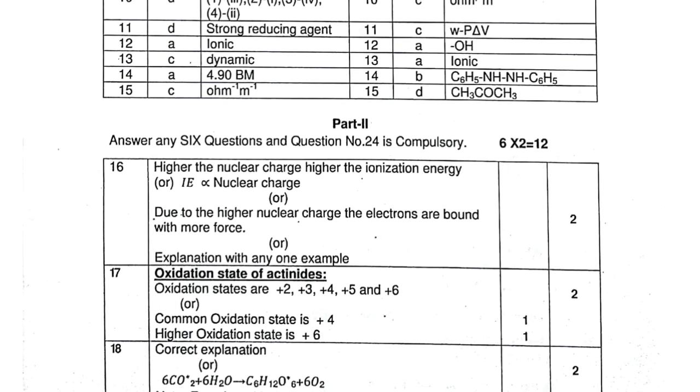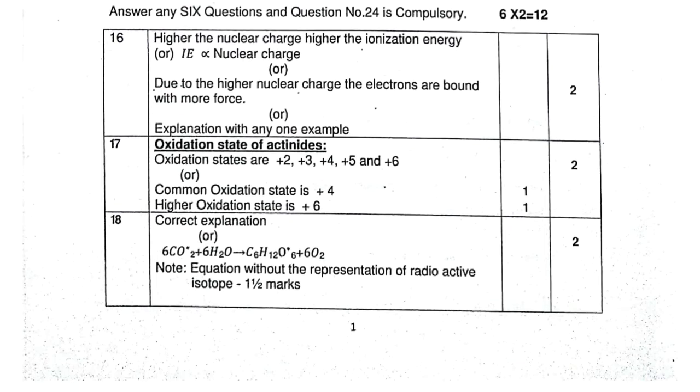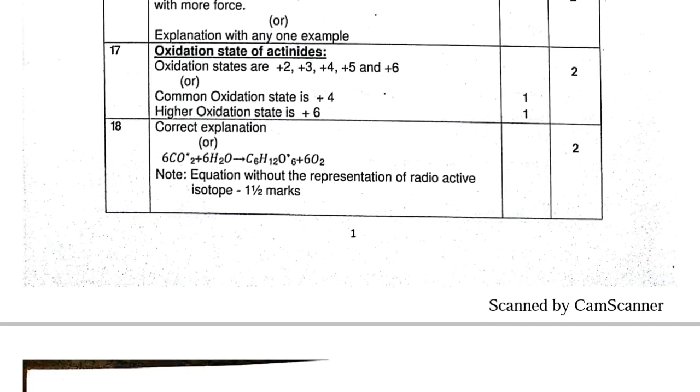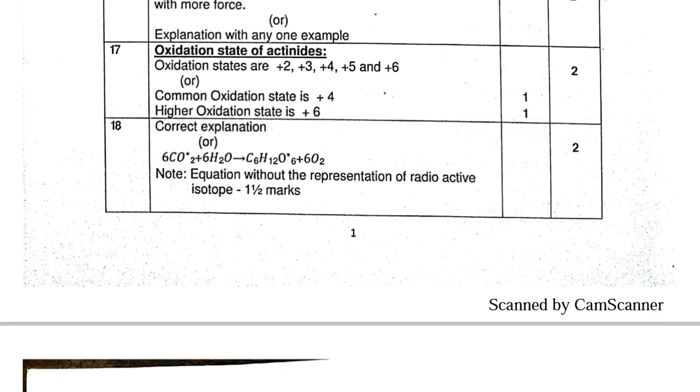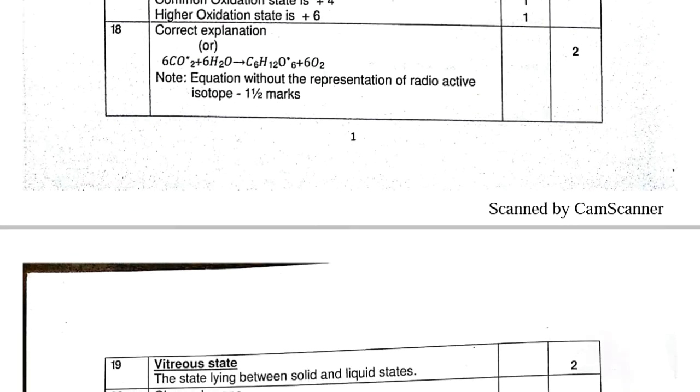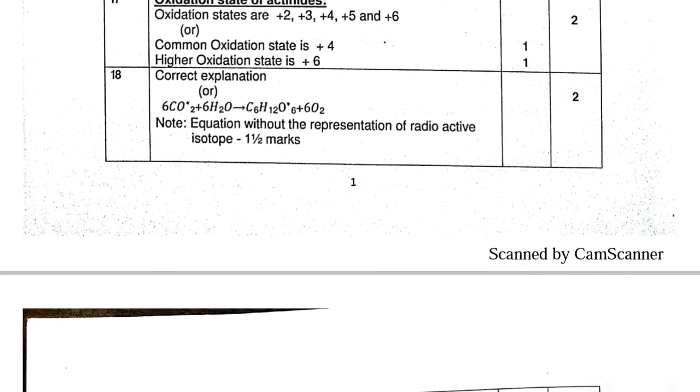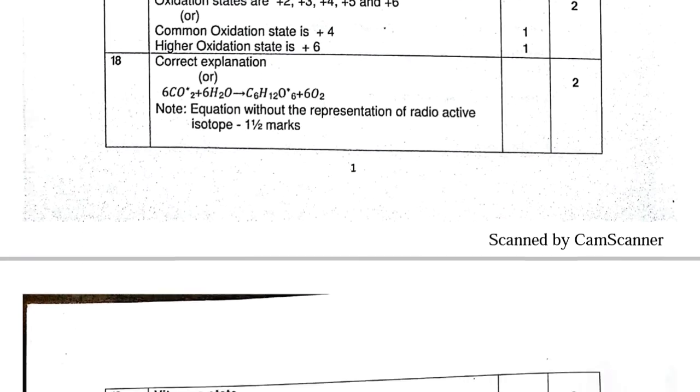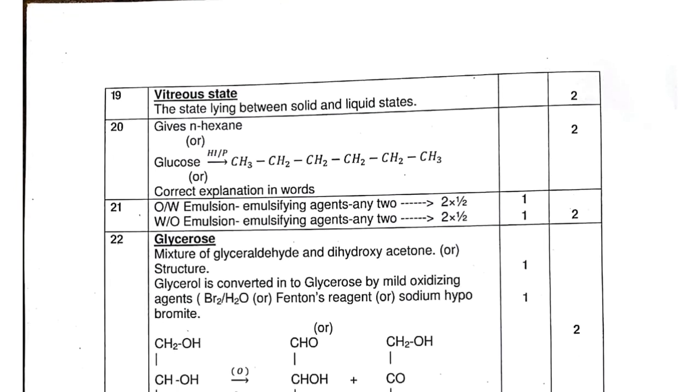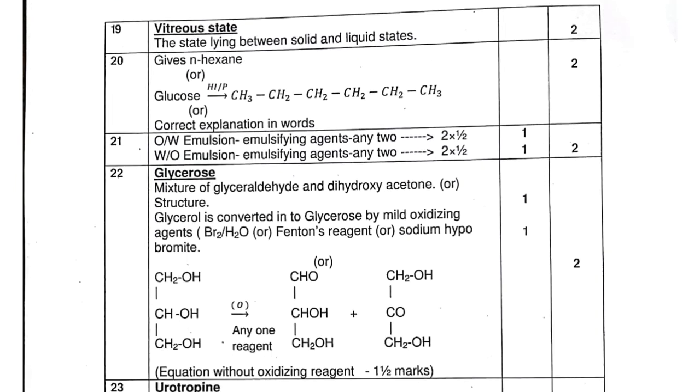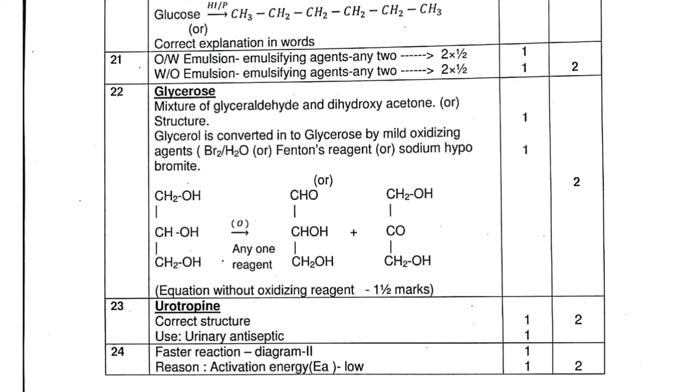In Part-2, six questions need to be answered. These are two mark questions. For two marks, if they've given two marks full, it's complete. Otherwise it's half mark. For questions with equations, if the equation is correct, that's one mark. If the explanation is correct, that's another mark. They've noted this clearly - half mark, one mark, one and a half marks accordingly.